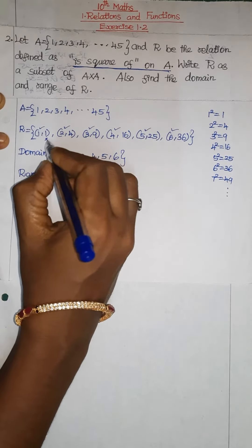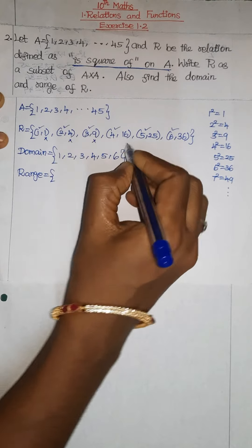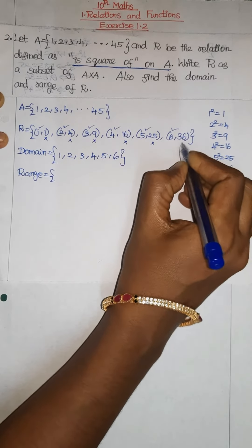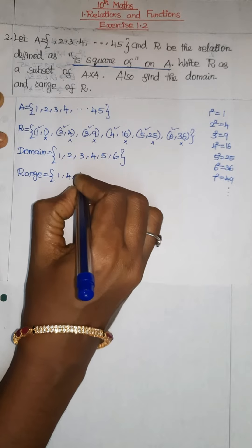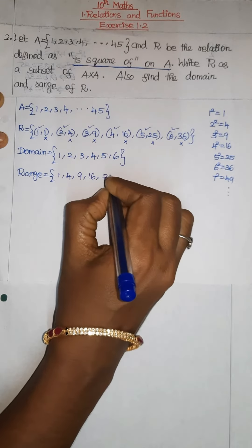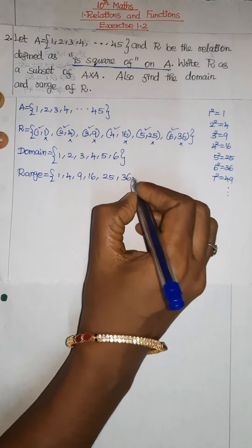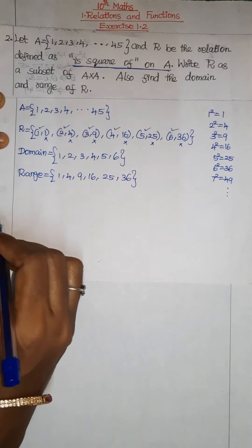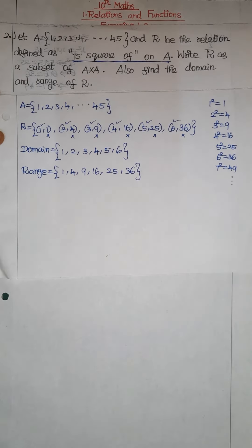Second elements means 1, 4, 9, 16, 25, 36. Required answer for this sum, thank you.